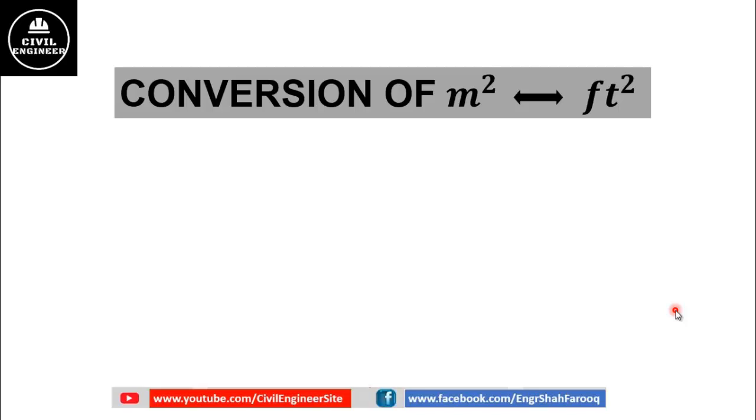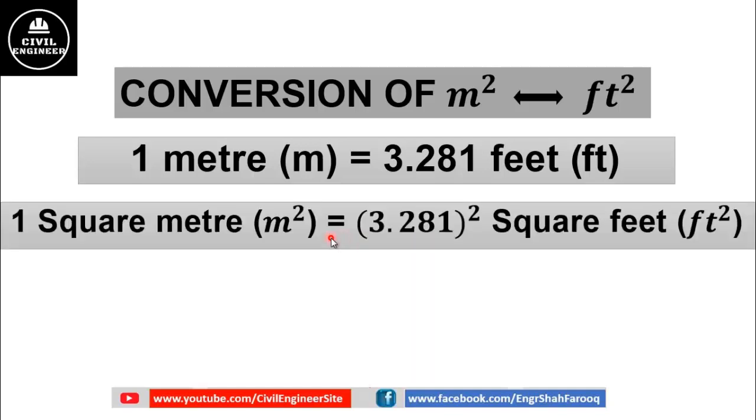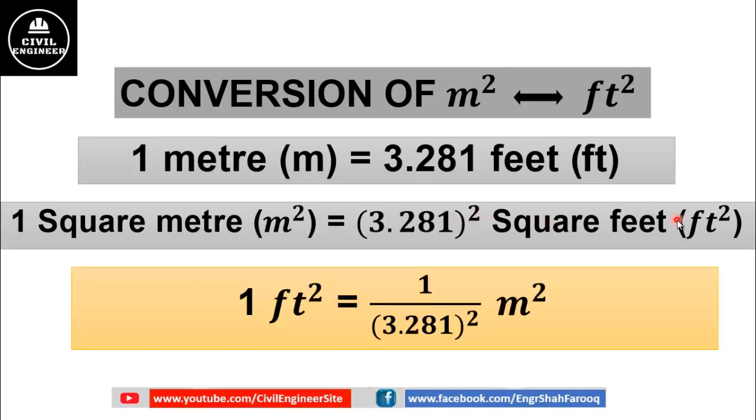To learn the conversion of meter square into feet square, first we will explore the relationship between meter square and feet square. As we know, one meter is equal to 3.281 feet, so one square meter will be equal to (3.281)² square feet, and one square feet will be equal to 1 over (3.281)² square meter.